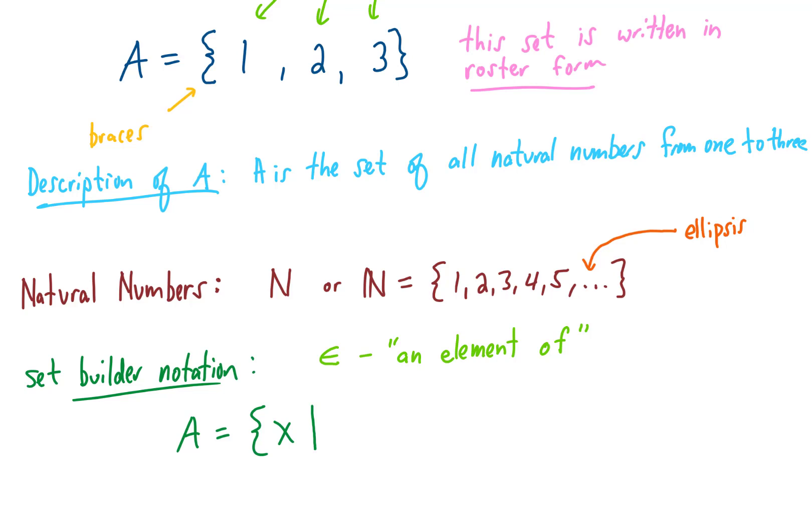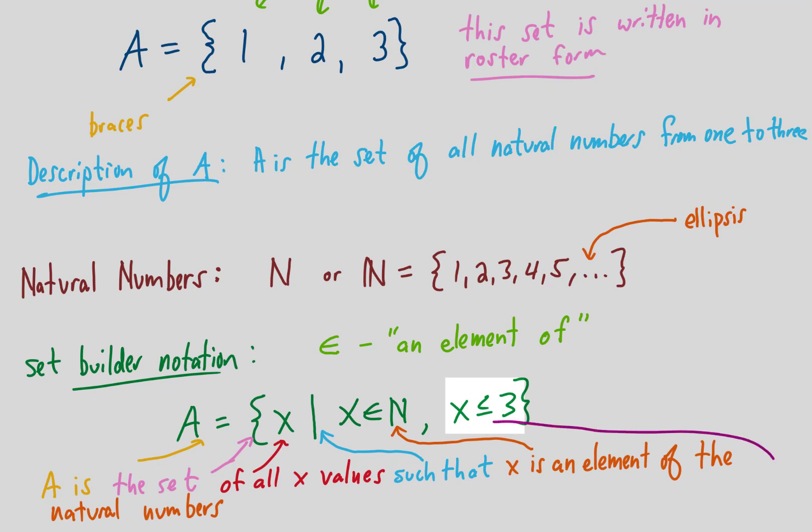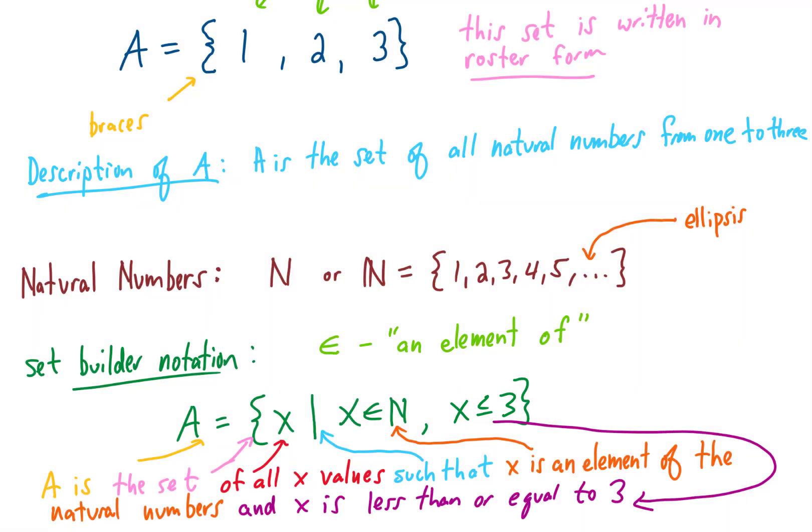Well, the values 1, 2, 3 are all elements of the natural numbers, and they're all less than or equal to 3. So the set builder notation translates pretty directly from our description of set A above. The x says 'of all x values', this vertical line says 'such that', this bit says that x is an element of the natural numbers, and this last piece says that x is less than or equal to 3. Seems like kind of a complicated way to say the set of numbers 1, 2, 3, but this set builder notation will come in handy later.